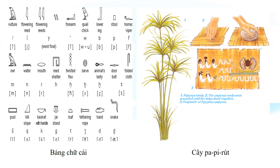Cây Papyrus mọc rất nhiều ở vùng đầm lầy ven hai bờ sông Nile và dựa vào phù sa màu mỡ của sông Nile để nuôi dưỡng và phát triển. Ngoài việc làm ra giấy, cây Papyrus còn có những công dụng khác nhau như là có thể dùng làm đồ ăn - ăn sống hoặc nướng phần thân dưới và rễ của cây. Hoặc khi người Ai Cập cổ đại muốn nhai thứ gì đó, họ sẽ nhai thân cây Papyrus, nuốt lấy nước và nhả bã giống như chúng ta nhai kẹo cao su.